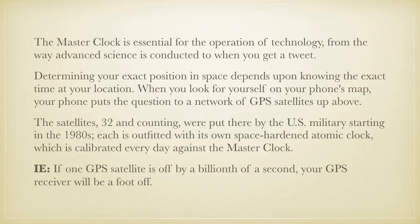The master clock is essential for the operation of technology, from the way advanced science is conducted to when you get a tweet. Determining your exact position in space depends upon knowing the exact time at your location. When you look for yourself on your phone's map, your phone puts the question to a network of GPS satellites up above. The satellites — 32 and counting — were put there by the US military starting in the 1980s. Each is outfitted with its own space-hardened atomic clock, which is calibrated every day against the master clock. If one GPS satellite is off by a billionth of a second, your GPS receiver will be a foot off.